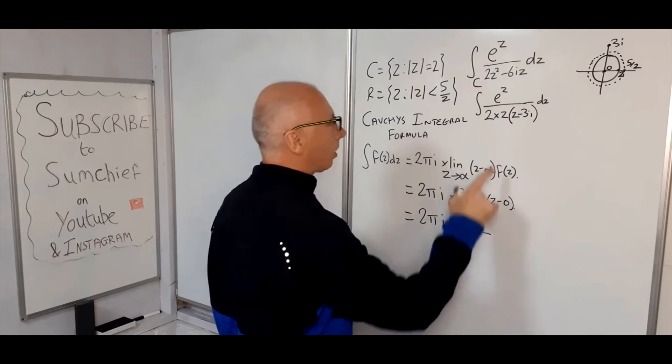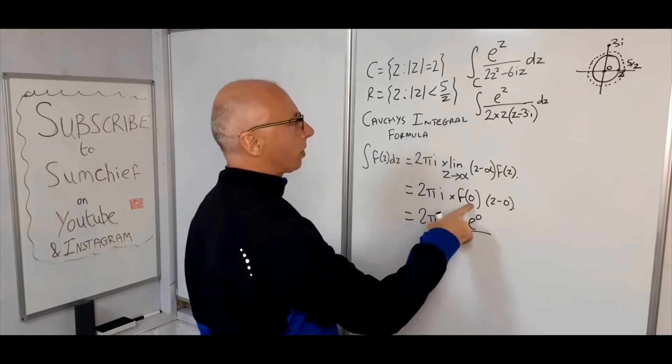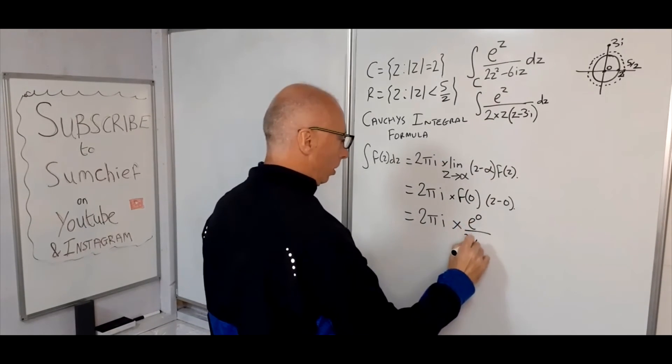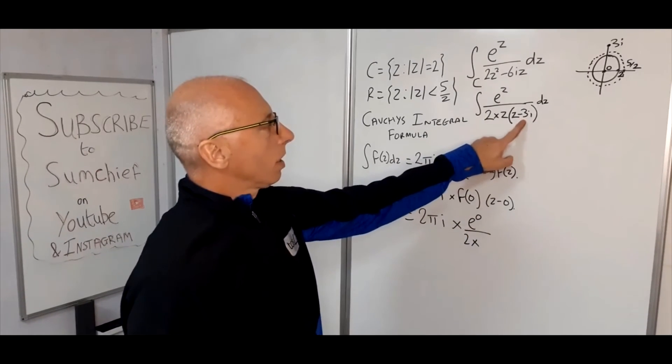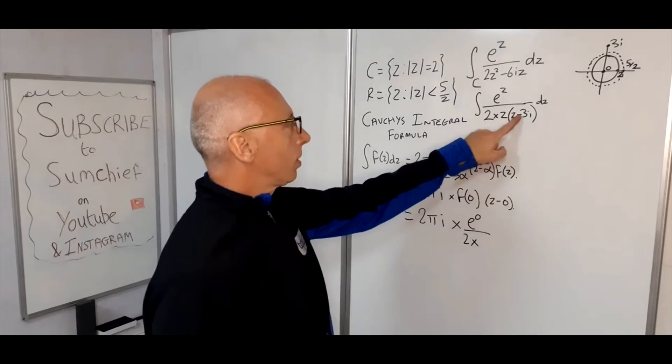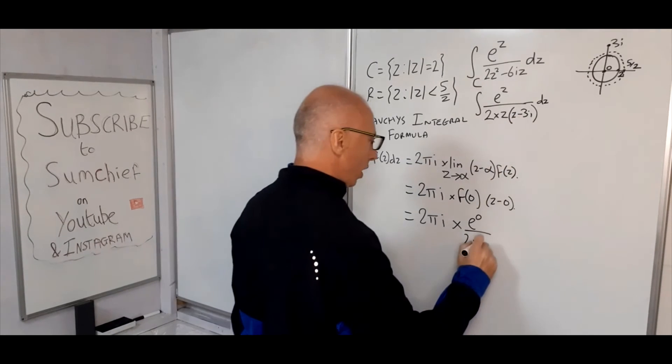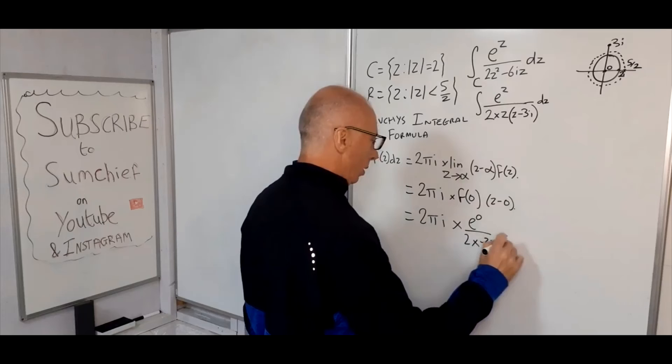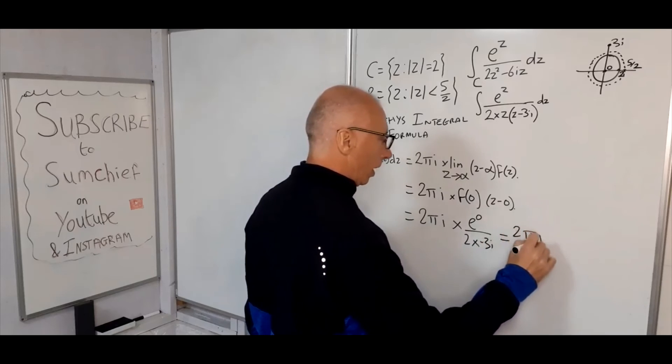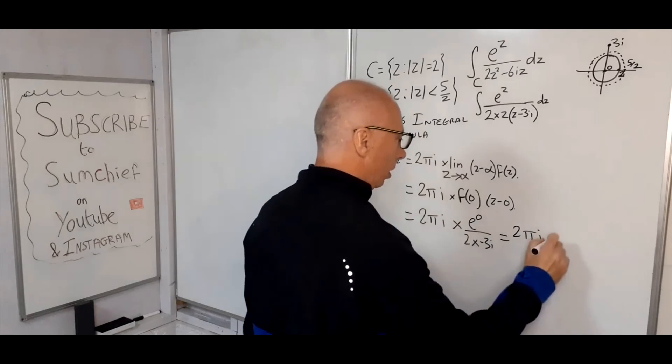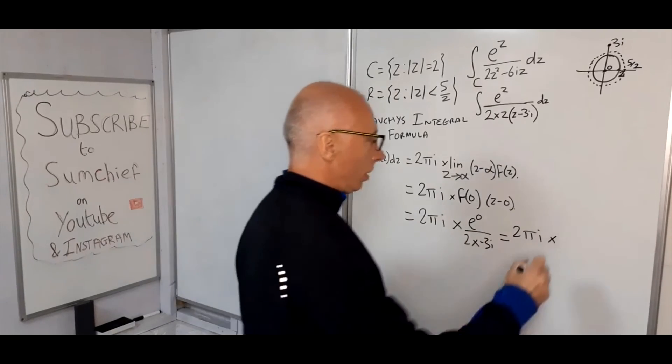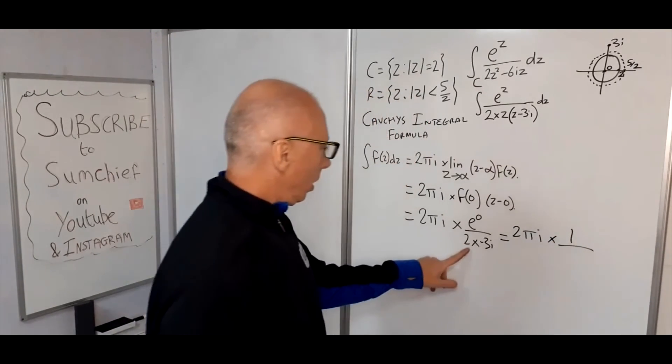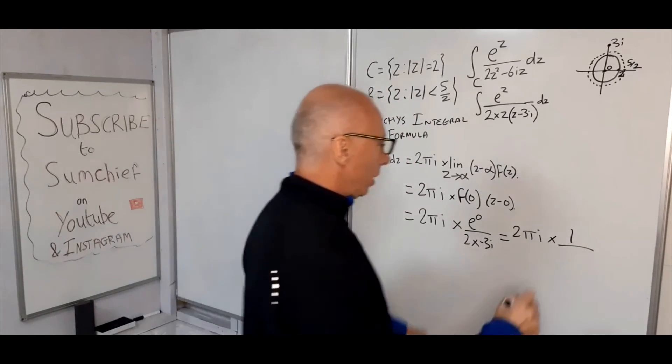So multiply that by this function here without the singularity. So e to the 0, all the z's are going to be 0 because we want f of 0. 2 times z minus 3i. Well that's the 0, z is 0, so it's minus 3i. So that basically equals 2πi times e to the 0 is 1, 2 times minus 3i is minus 6i.